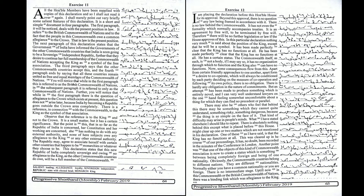Secondly, there is a reference in connection with the Commonwealth to the king as the symbol of that association. Observe that the reference is to the king and not to the crown — it is a small matter but it has a certain significance. The point is that in so far as the Republic of India is concerned, her constitution and her working are concerned, she has nothing to do with any external authority and none of her subjects owe any allegiance to the king or any other external authority.